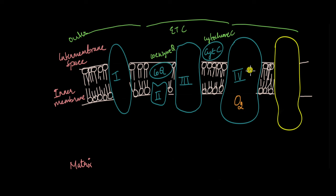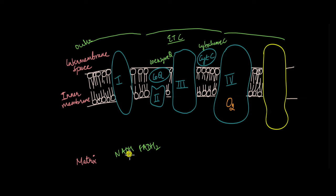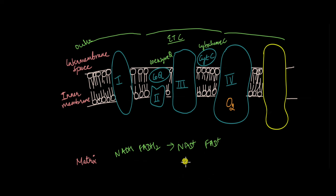All these protein complexes make up the electron transport chain, and it is here where the NADH and FADH2 produced are utilized. These electron carriers are filled with energy as they received electrons during glycolysis, and they need to donate those electrons to return to their natural state — NAD+ and FAD. To come back to their natural state, they donate the electrons they have received to the complexes in the electron transport chain.